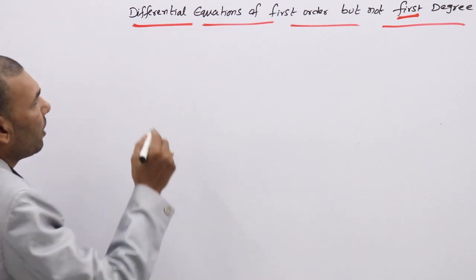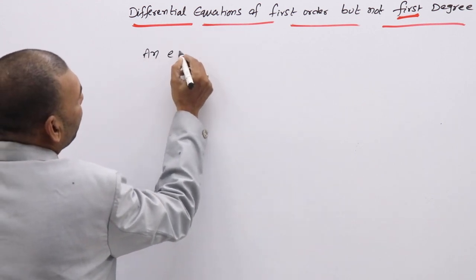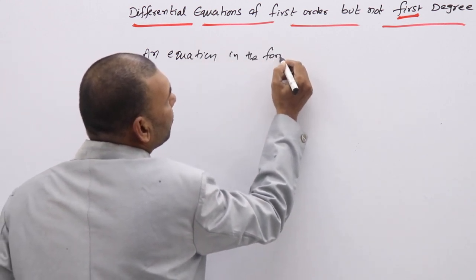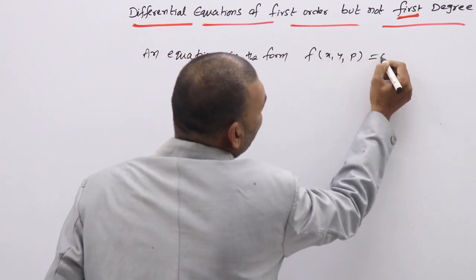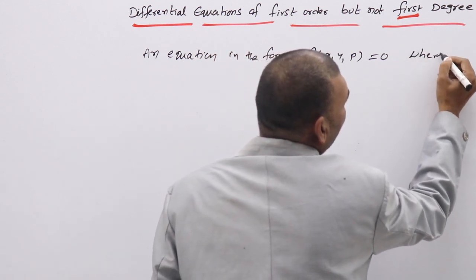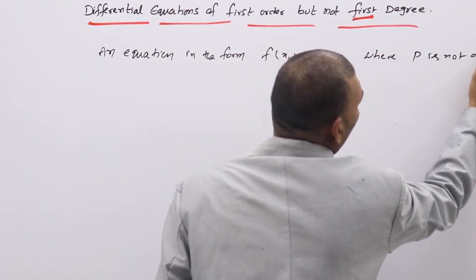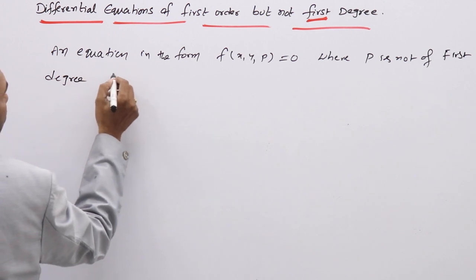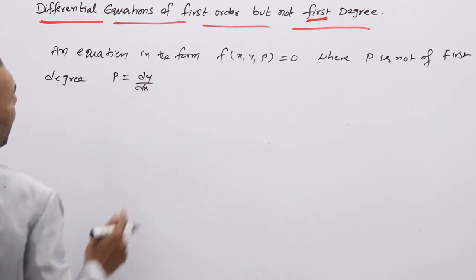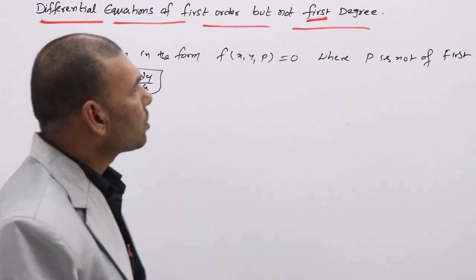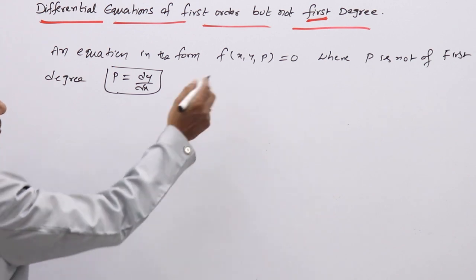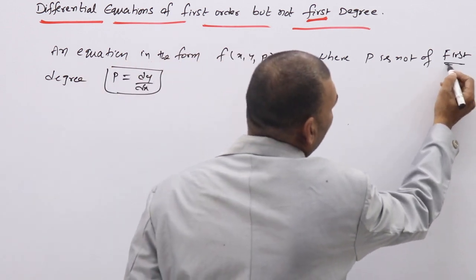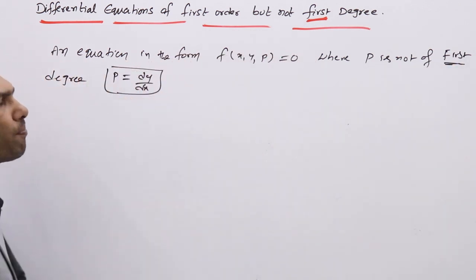This type of DE will be in the form: an equation F(x, y, p) = 0, where p is not of first degree. We know p means dy/dx. So we have some equation in x, y, p — three parameters — where p is dy/dx, but p cannot be of first degree. That means the degree of p may be greater than 1.